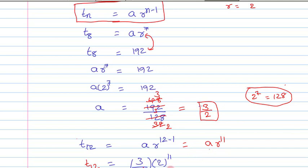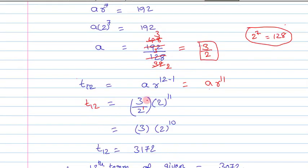T12 equals 3/2 times 2 to the power of 11. On simplifying this, we can write it as 3 times 2 to the power of 10.